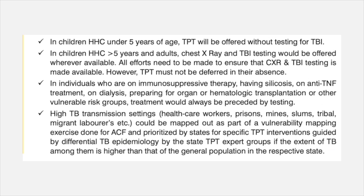In immunocompetent patients, we will be offering TB preventive therapy to all under 5 years of age. In children above 5 years of age, only after TB infection testing is positive is TPT decided. However, if TB infection testing is not available, TPT management may differ. In groups with high TB transmission probability — like healthcare workers, prisons, mines, and tribal populations — specific interventions for preventive therapy can be done according to their vulnerability.